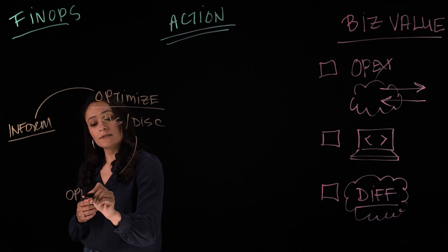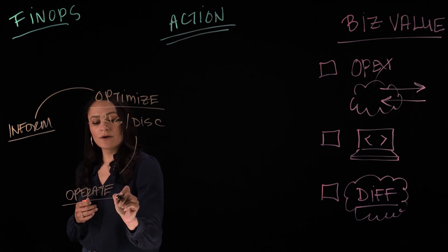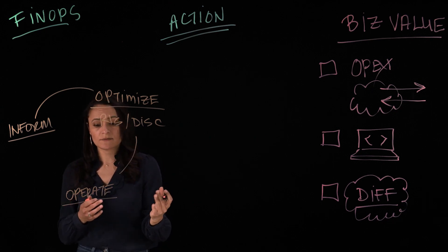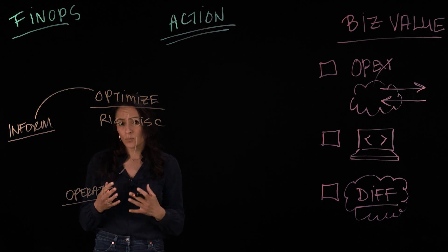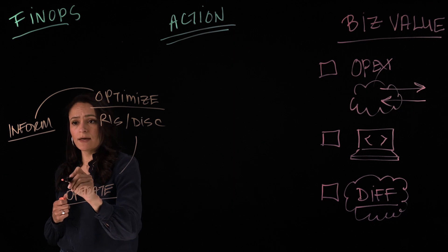The third phase is Operate. This is where you're continuously evaluating your business objectives. How are you tracking to them? What are the trends there? And then continuously optimizing towards that.